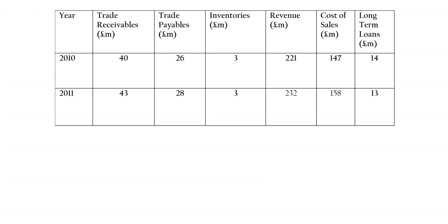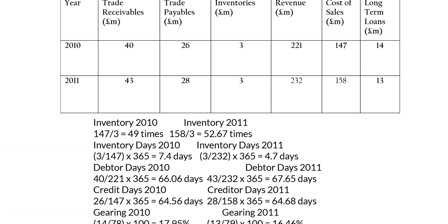The practice question asks for comparisons between 2010 and 2011, using only the financial figures provided. For inventories in times: 2010 is 49 times and 2011 is 52.67 times — more efficient in 2011. For inventory days: 2010 is 7.4 days and 2011 is 4.7 days — again more efficient in 2011.